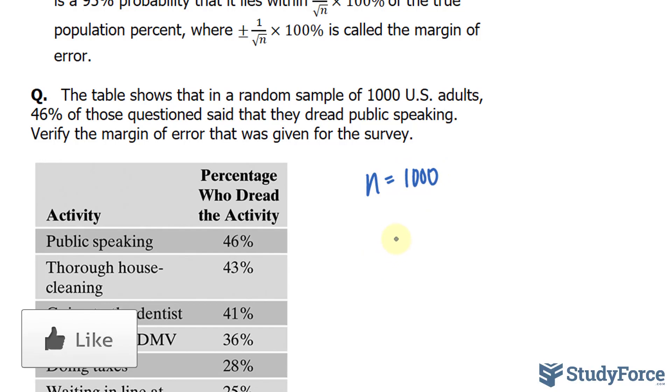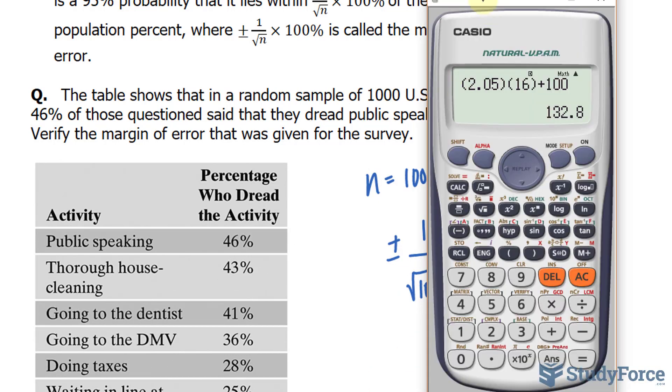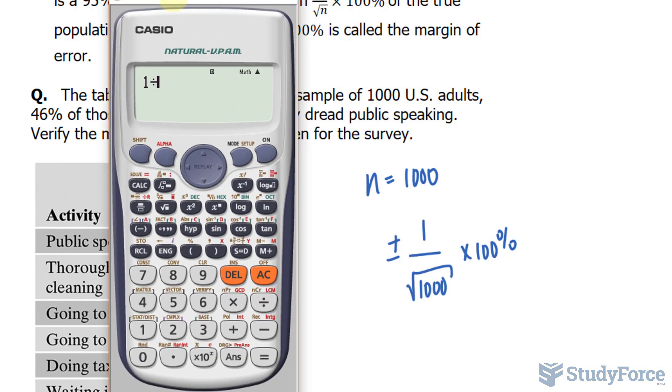So calculating the margin of error, we'll write down plus minus 1 over the square root of 1,000 times 100%. Let's use our calculator for this. 1 over the square root of 1,000, multiplying that by 100%, gives us 3.16.